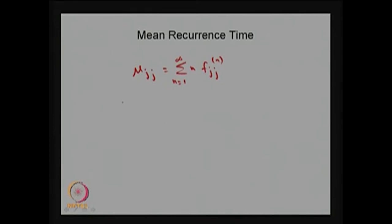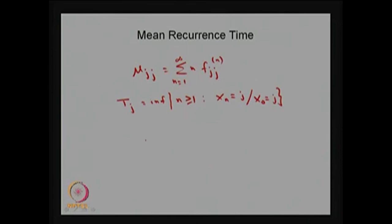The same thing can be obtained using another concept by introducing the random variable T suffix j — that is the infimum of n greater than or equal to one such that X_n equals state j, given that X_0 was state j. This is a random variable denoting the first return time to state j. The first return time: here the step is the nth step and you find the first time you return to state j starting from state j.